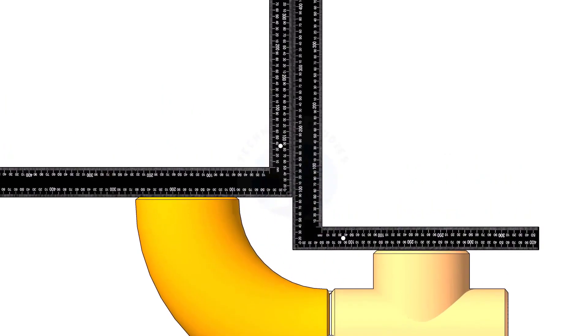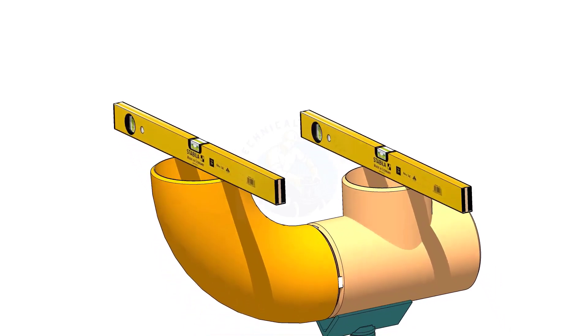When you check a T to elbow fit up, hold the right angles as shown and check the parallel. If the parallel is correct, level the T face and check the level of the elbow face.